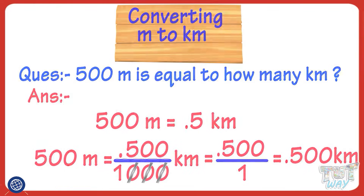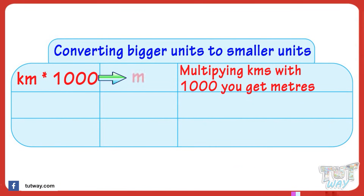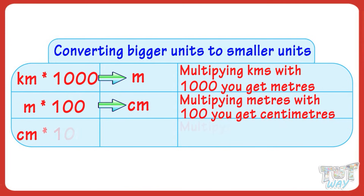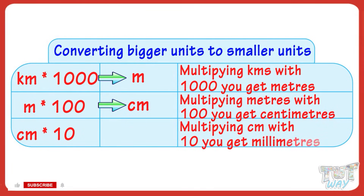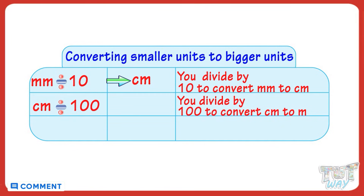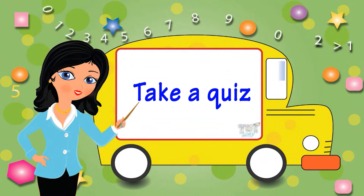So kids, let's revise what we learned. Multiplying kilometers by 1,000 gives you meters. Multiplying meters by 100 gives you centimeters. Multiplying centimeters by 10 gives you millimeters. Divide by 10 to convert millimeters to centimeters. Divide by 100 to convert centimeters to meters. Divide by 1,000 to convert meters to kilometers. You need to practice to remember all these. Now go ahead and take a quiz to learn more!